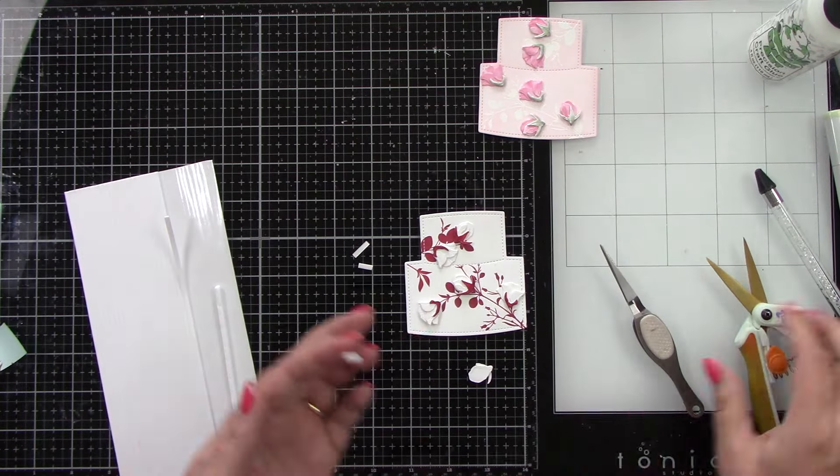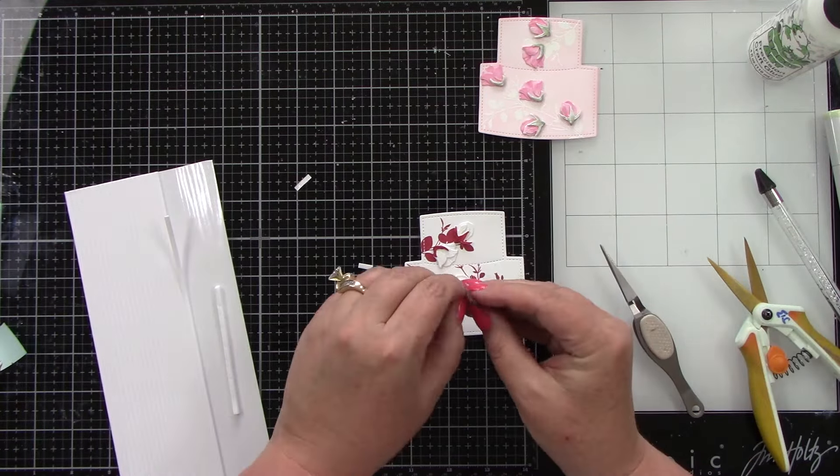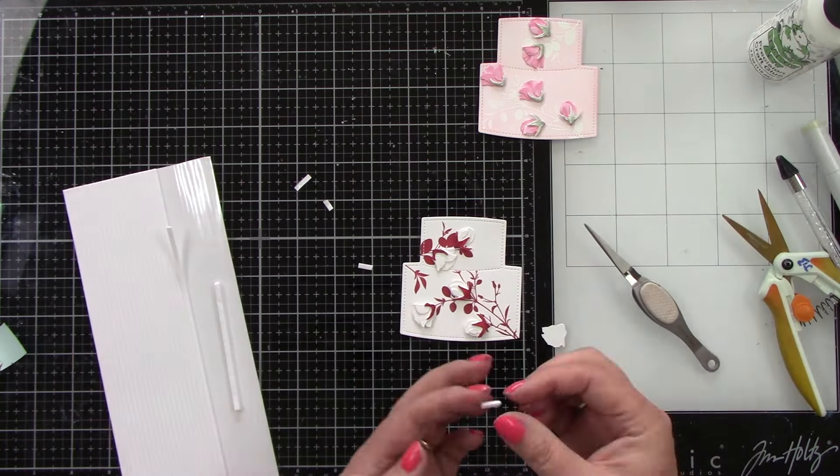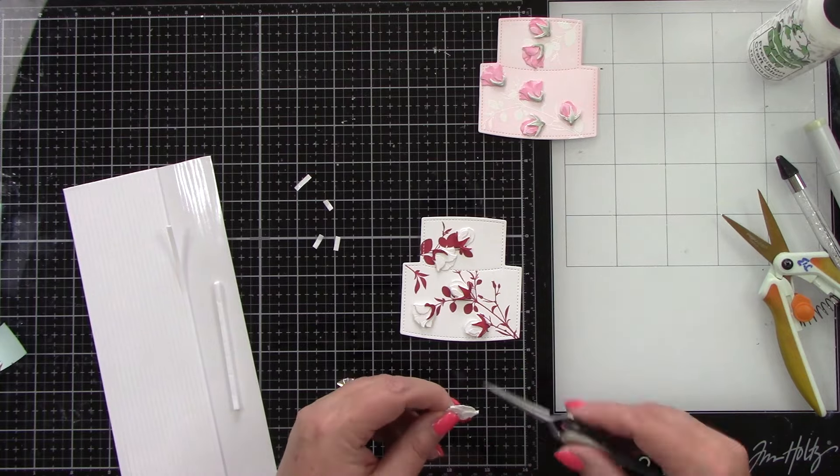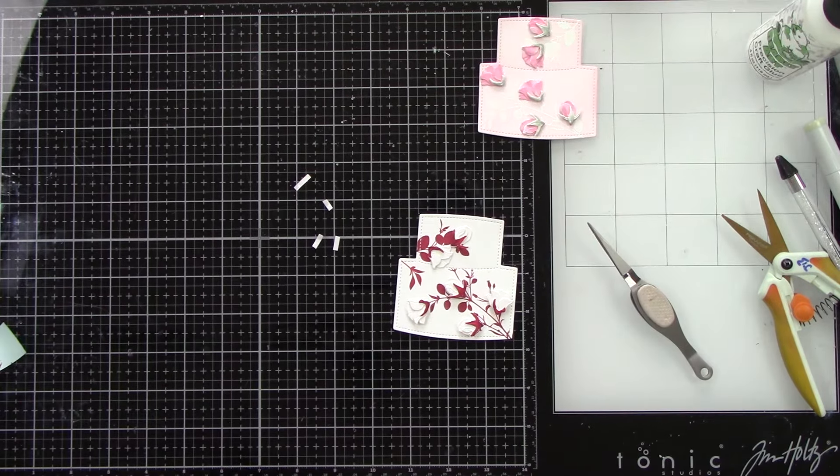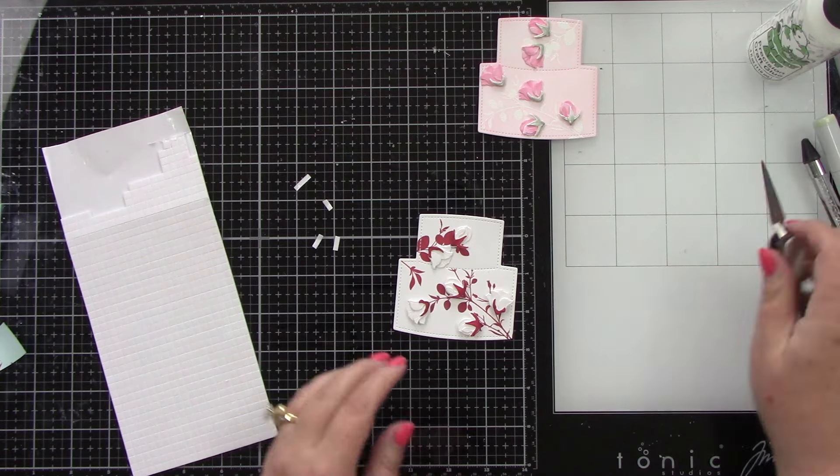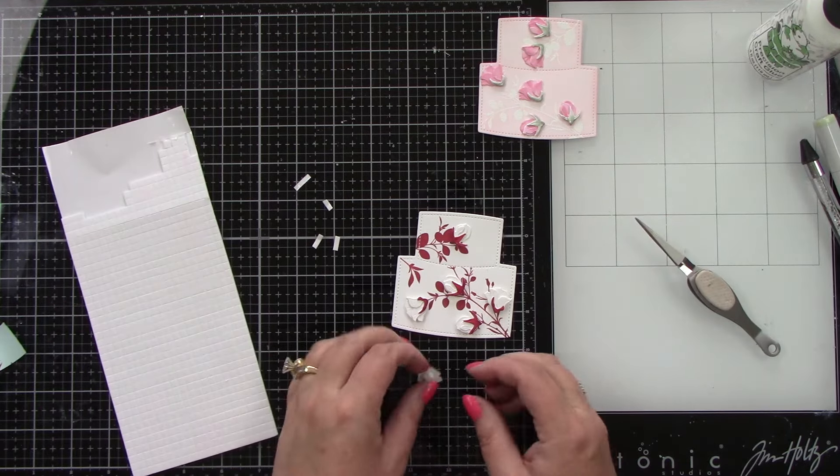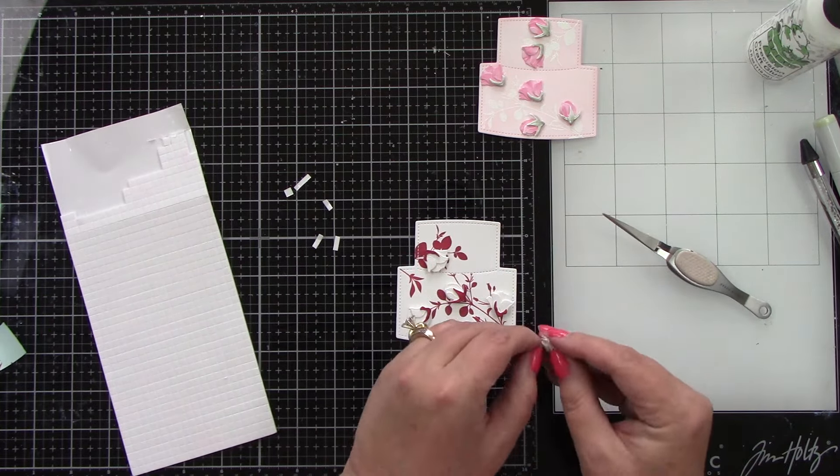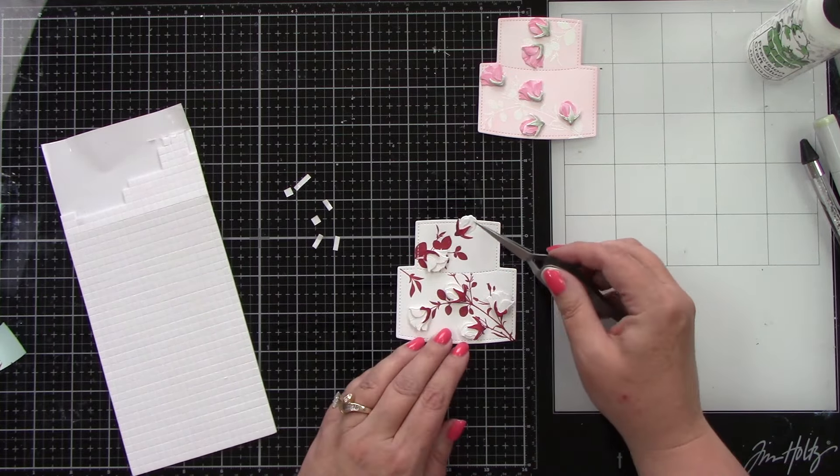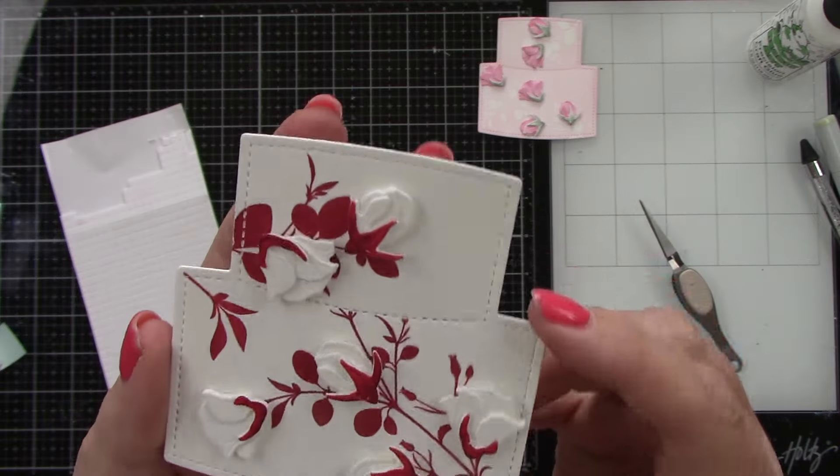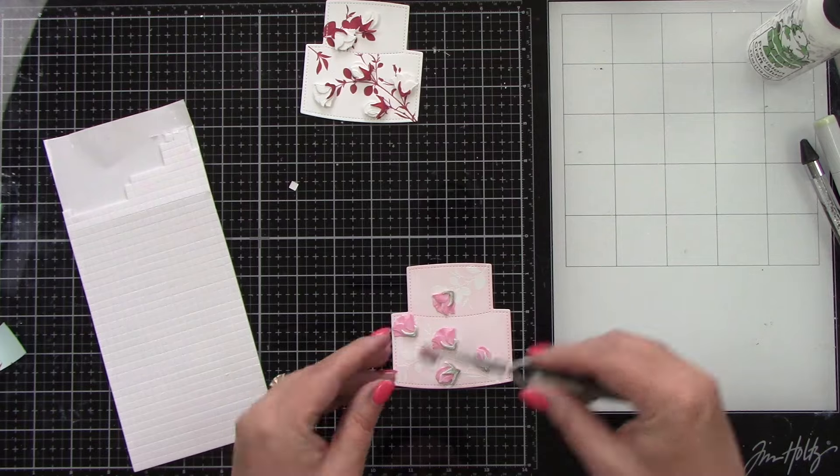I originally started with my foam adhesive strips and was trimming it, and then I'm like, wait a minute, this is too much work. Let me get my foam squares, which I'm going to do here in just a second, and then I can just add those. As you can see, I'm lining these up with the stamped images to where it looks like the roses are coming off of the greenery. That's my plan for how I'm lining these up. And these foam little squares go so much faster. I don't have to trim anything. But look at how 3D that looks. I think it's so pretty.